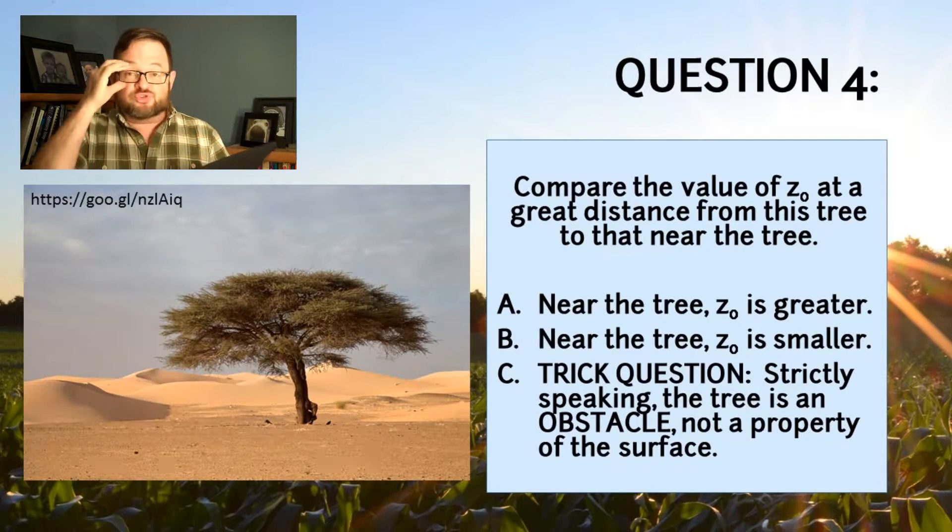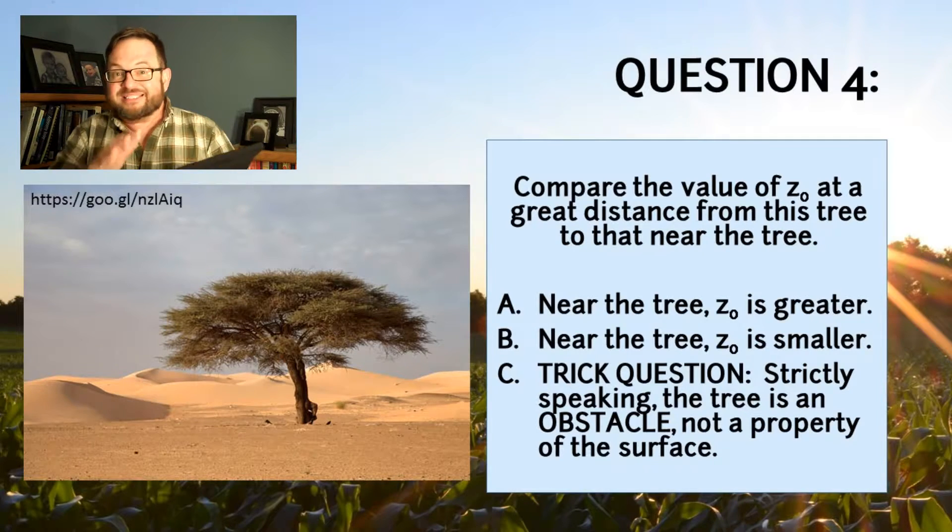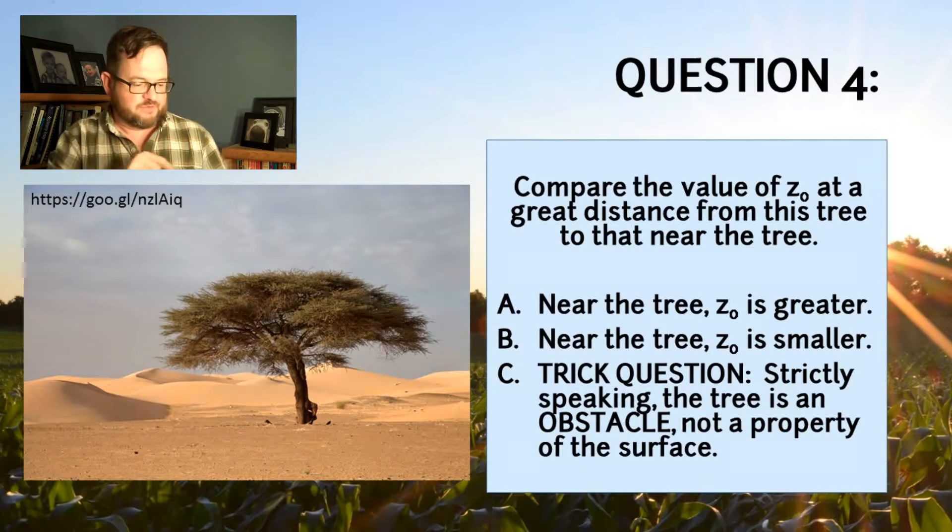But strictly speaking, that tree as a single, discrete obstacle to the flow, it's an obstacle. It's not property of the surface.